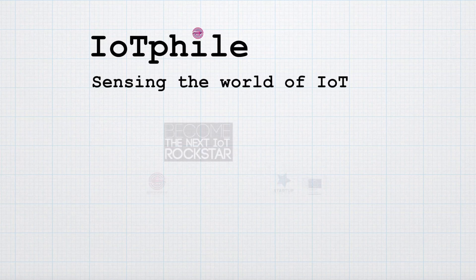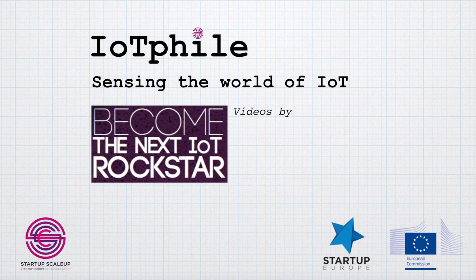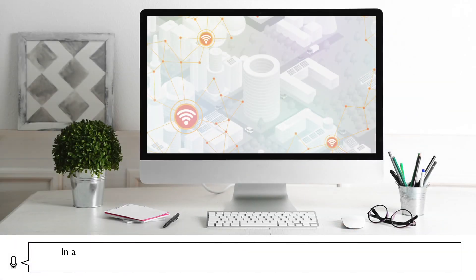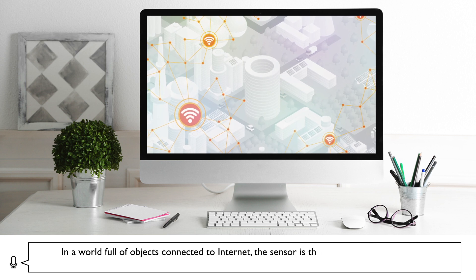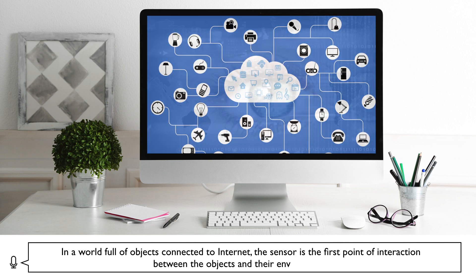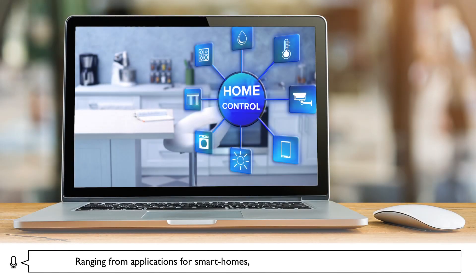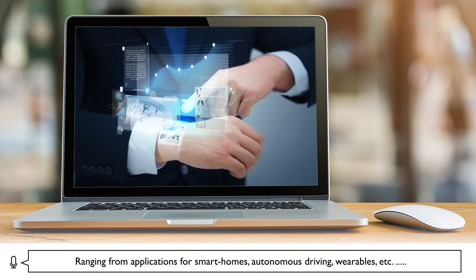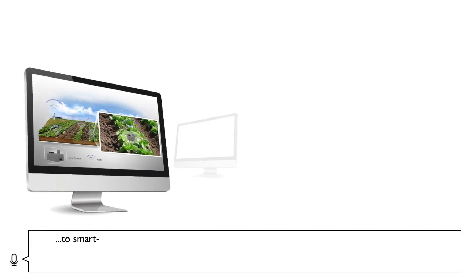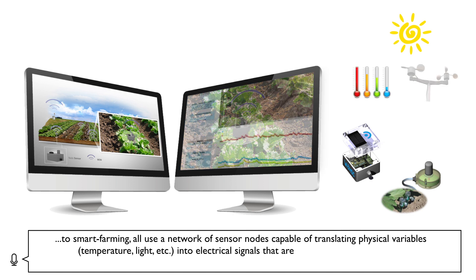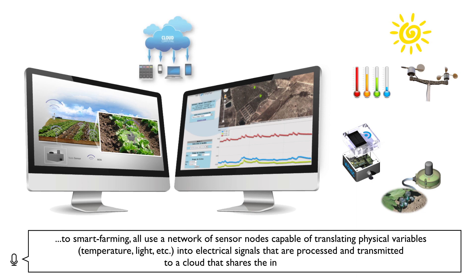Sensing the world of IoT. In a world full of objects connected to the Internet, the sensor is the first point of interaction between the objects and their environment, ranging from applications for smart homes, autonomous driving, wearables, to smart farming. All use a network of sensor nodes capable of translating physical variables — temperature, light, etc. — into electrical signals that are processed and transmitted to a cloud that shares the information.